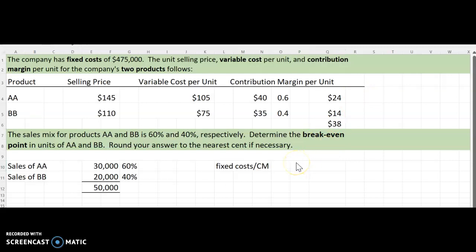And then now we're going to come down here and plug this in. So fixed costs are $475,000, and we're going to do $475,000 divided by our contribution margin for our sales mix, which was our $38 we got up here. So our break-even in units total is going to be 12,500.